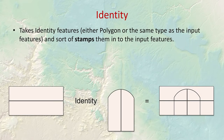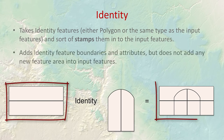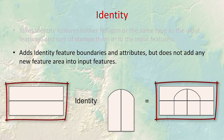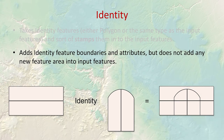The identity tool stamps identity features into an existing feature class. The new feature class covers the same area as the original source feature class — it doesn't extend beyond it. Any areas overlapping an identity feature get cut along the identity boundary and receive the identity attributes, giving you both shapes and attributes stamped into your feature class.